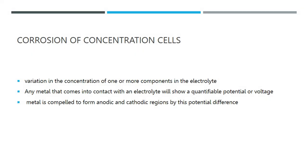The second corrosion type is concentration cell corrosion. A variation in the concentration of one or more components in the electrolyte generates the potential difference or electromotive force. Any variations in the electrolyte touching the metal results in the formation of distinct anode and cathode areas. Any metal in contact with an electrolyte will show a quantifiable potential or voltage, and in electrolytes with varying compositions, the electrical potential of the same metal varies, compelling the metal to form anodic and cathodic regions.